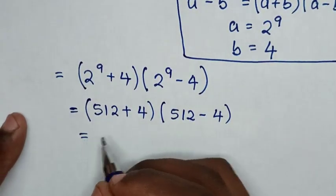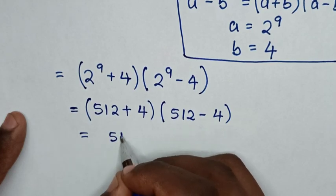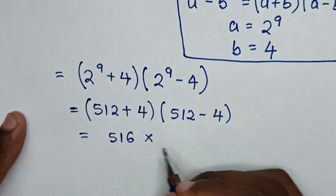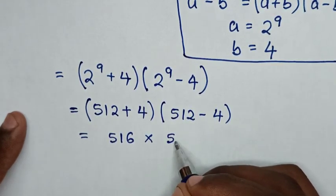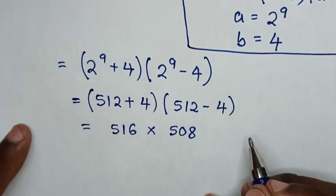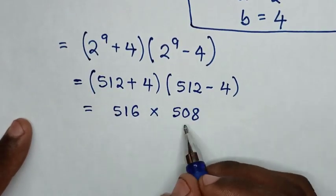This equals 516 times 508. Now 500 is common in both numbers.